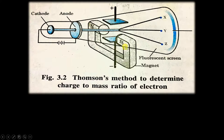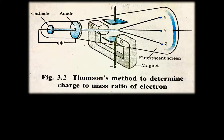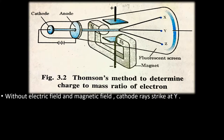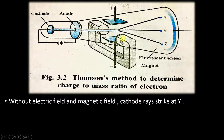The additional features added by Sir J.J. Thomson were a magnetic field, created using magnets — you can see the north pole and south pole here — and an electric field, created using a positively charged and a negatively charged electric plate. When there was no electric field and no magnetic field, the cathode rays traveled in a straight line and hit the screen at point Y.